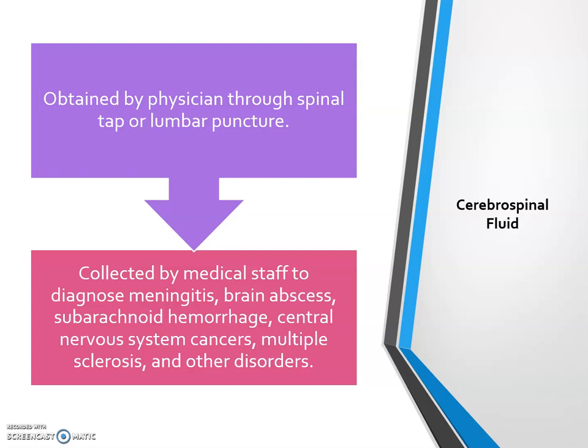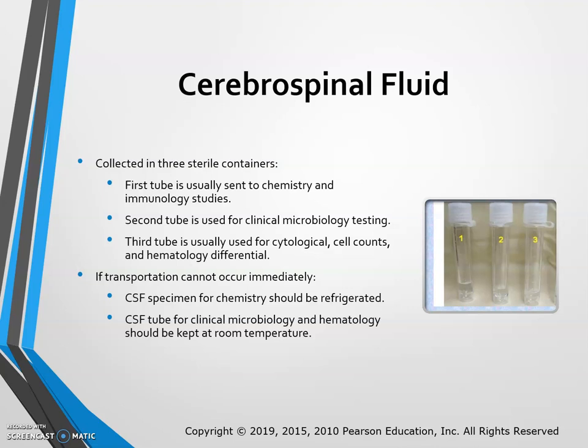Cerebrospinal fluid is obtained by a physician through a spinal tap or lumbar puncture — a crucial, essentially unretrievable sample. It is collected to diagnose meningitis, brain abscess, subarachnoid hemorrhage, central nervous system cancers, multiple sclerosis, and other disorders. CSF is collected in three sterile containers of less than 1 mL each: the first tube goes to chemistry and immunology, the second to clinical microbiology, and the third for cytological cell counts and hematology differentials. Chemistry specimens should be refrigerated; microbiology and hematology specimens are kept at room temperature.